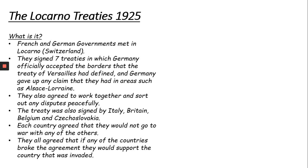They also agreed to work together and sort out any disputes peacefully, moving away from violent solutions into peaceful negotiation. The treaty was also signed by Italy, Britain, Belgium and Czechoslovakia, showing that other countries think this is quite a good idea. Each country agreed that they would not go to war with any of the others, and they all agreed if any country broke the agreement, they would support the country that was invaded — back to our idea of collective security.